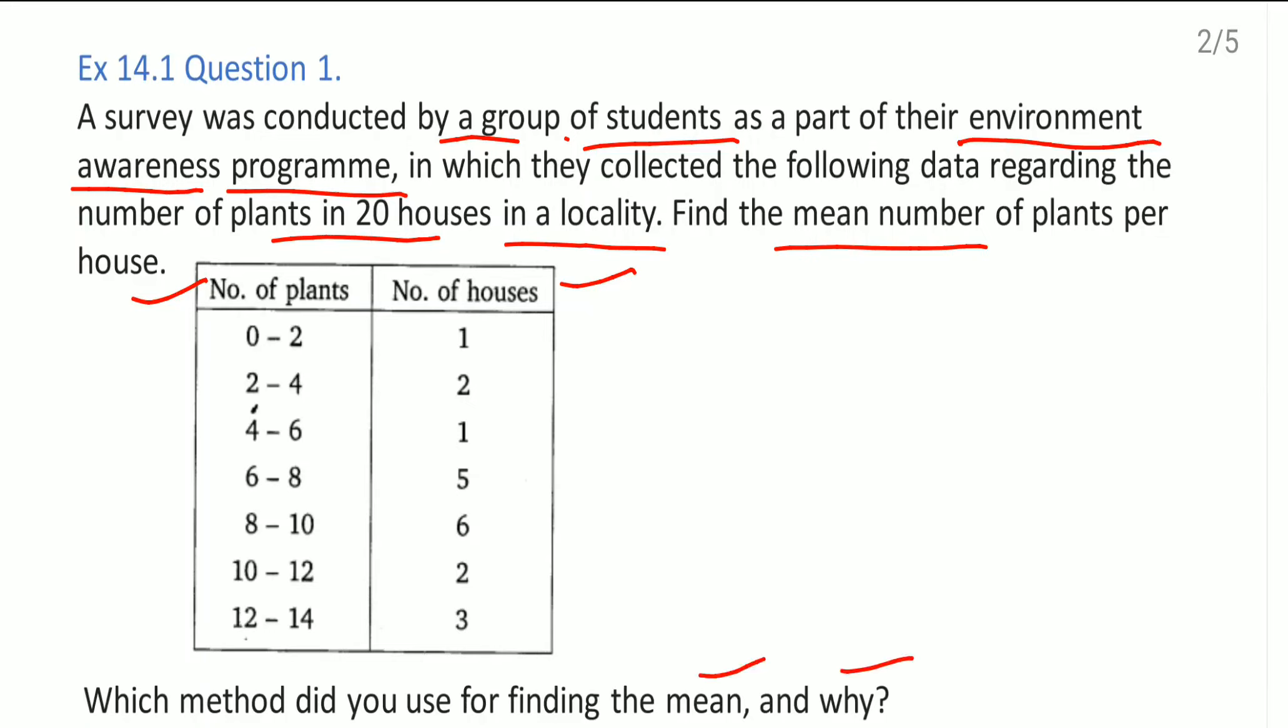Just see here, look at the table. Here if I find out the class marks, see 0 to 2, class mark will be 1. 2 to 4, class mark will be 3. And here number of houses, this column also has small numbers. So for this table, for this information, we are going to use direct method. Now let us see the answer.